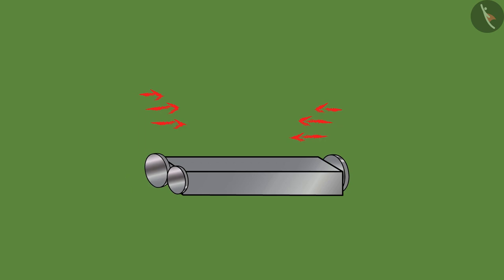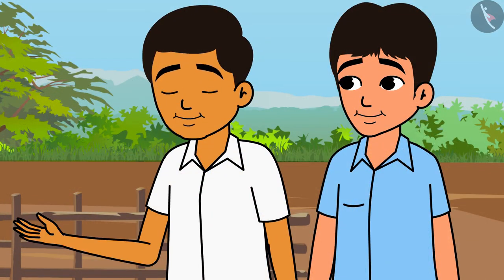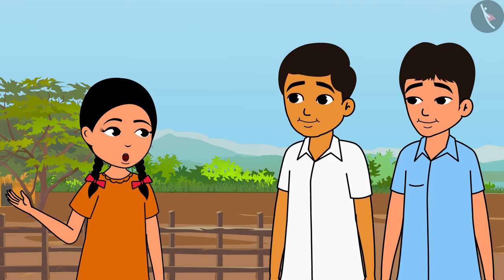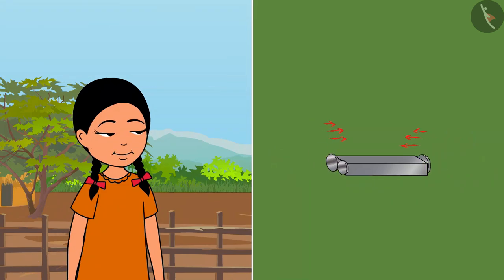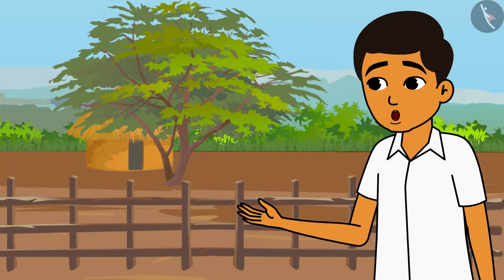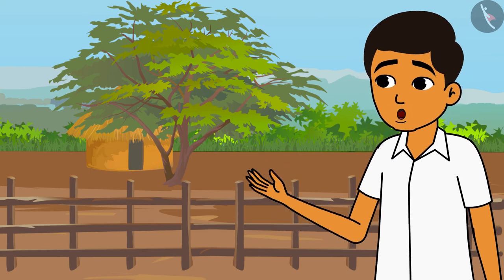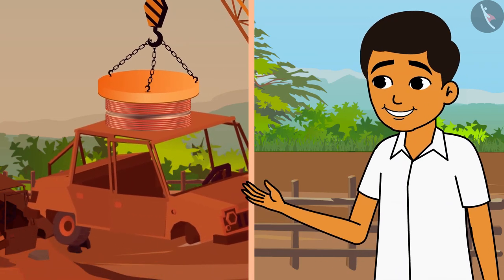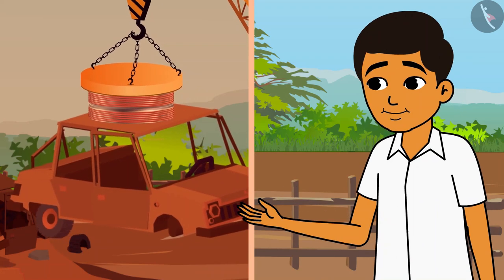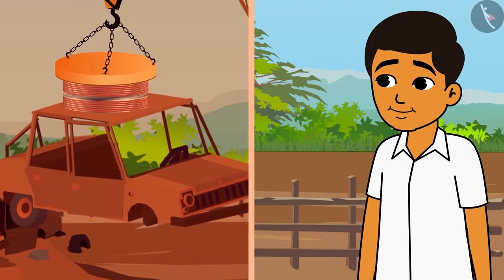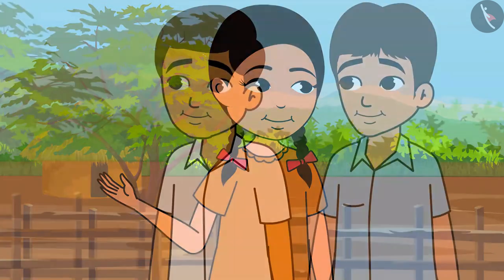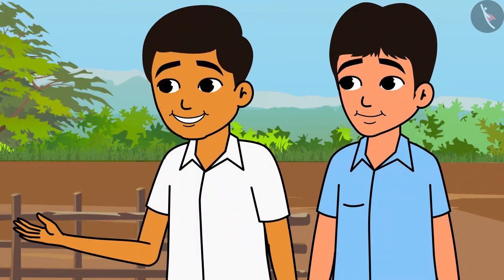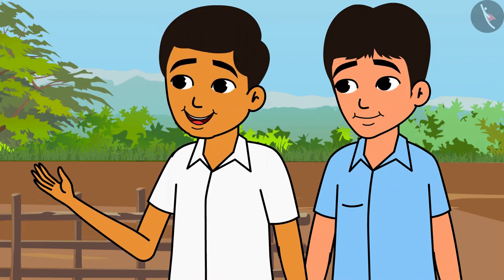Look at these coins — how they are sticking to the magnet. These are getting attracted at the corners of the magnet and are not sticking in the center. When Raghu and I were coming, we saw a big crane in the junkyard which was attracting big iron scrap, but that crane was attracting iron in the center. Raghu and I will go to his father's shop and ask about this.